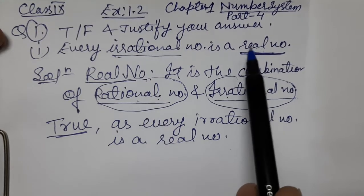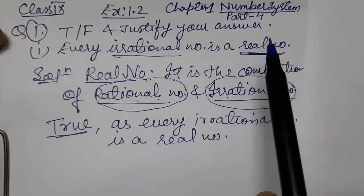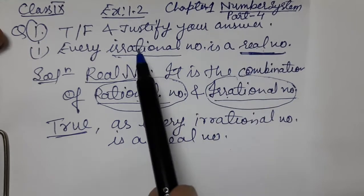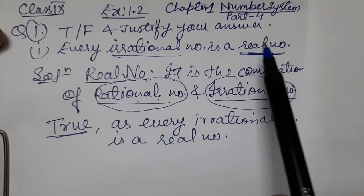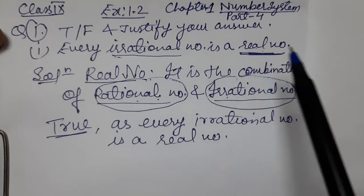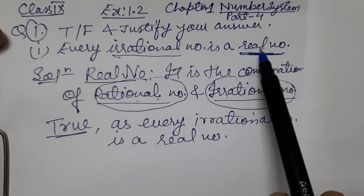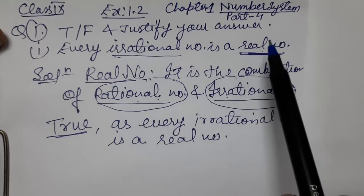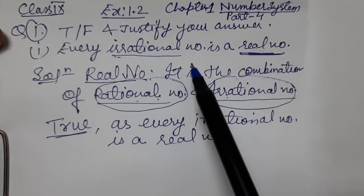Why is every real number is a rational number FALSE? Because real numbers have two types of numbers — rational and irrational. For example, 4 is a real number. Every real number is a rational number — that is FALSE. And every real number is an irrational number — that is also FALSE.